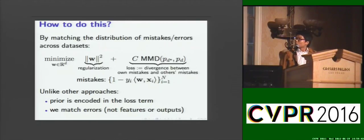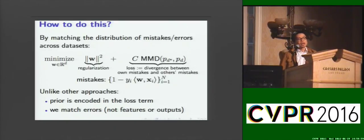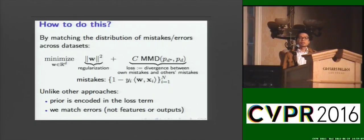We would like to highlight two things which we consider to be radical. The first is that prior knowledge — in our case, the mistakes committed in the other dataset — is encoded in the loss term, whereas typically prior knowledge is encoded in the regularization term. Secondly, we match errors instead of input features or function output, as is typically done.